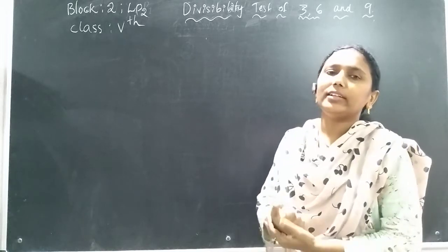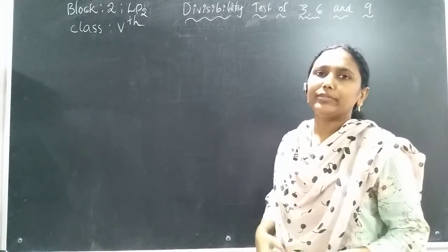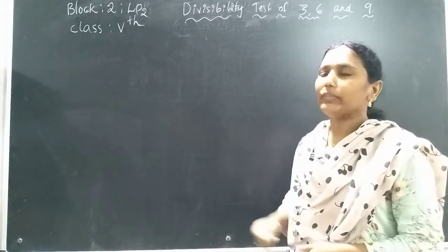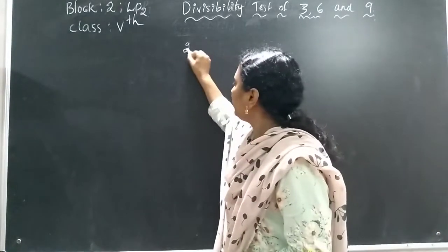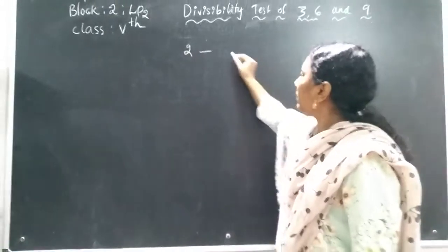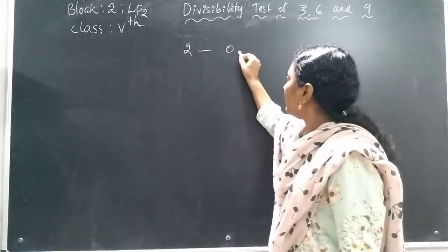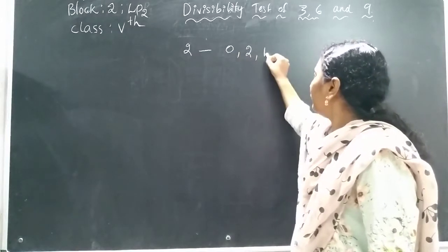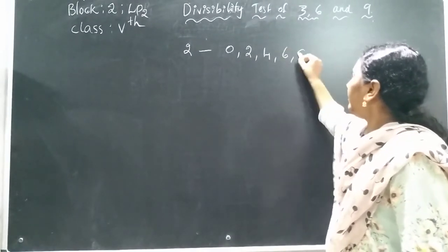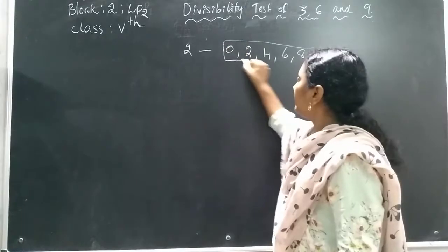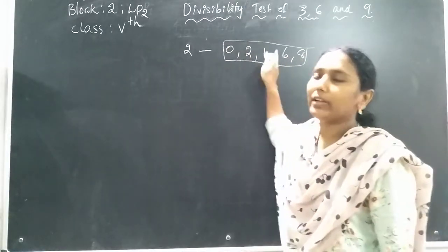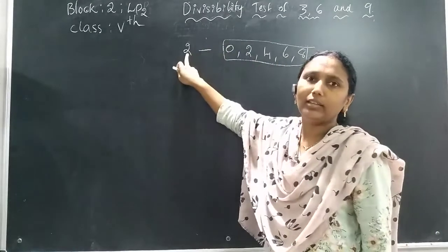We already learned the divisibility test for 2, 5, and 10. For divisibility by 2, we look at the ones place. The digits that should be there are 0, 2, 4, 6, and 8. When one of these digits is in the ones place, that number is divisible by 2.